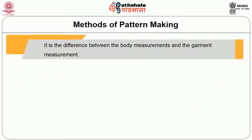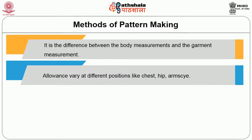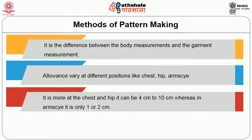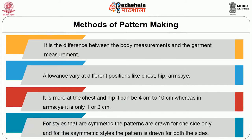Ease allowance is the difference between the body measurement and the garment measurement. This allowance varies at different positions like chest, hip, armscye, and waist. It is more at the chest and hip — it can be 4 cm to 10 cm — whereas at the armscye it is only 1 or 2 cm. For symmetric styles, patterns are drawn for one side only; for asymmetric styles, the pattern is drawn for both sides.